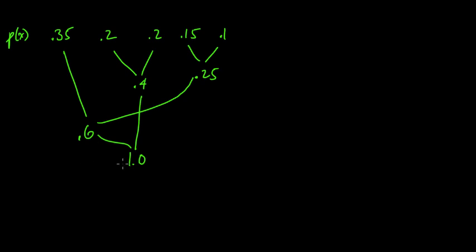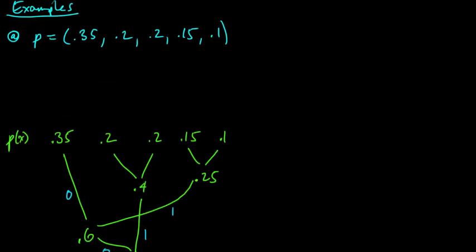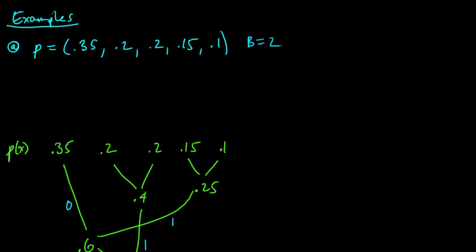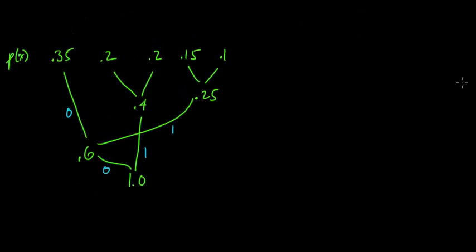After we've built the tree, the next step is to label each of these edges in the tree, each of these links. For this example, let's take B equal to 2, and the symbols in our code alphabet, let's take to just be 0 and 1. So A is 0, 1. We'll just have a simple binary case here.